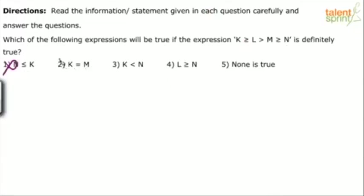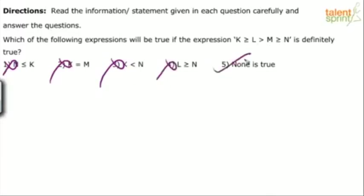k equal to m — no, this is ruled out. k less than — no, impossible, because k starts with greater than. You see k is greater than anything there, so k less than n is not possible. l greater than or equal to n is also wrong because L is greater than N. So none of this is the answer — option 5. None is true.